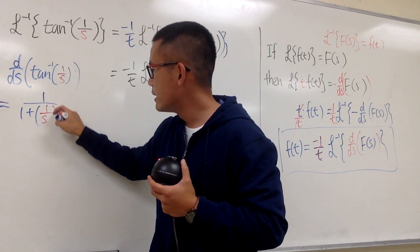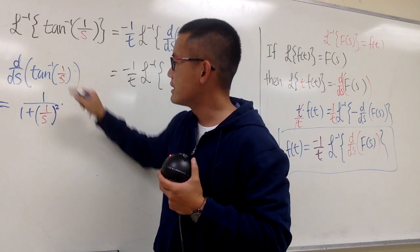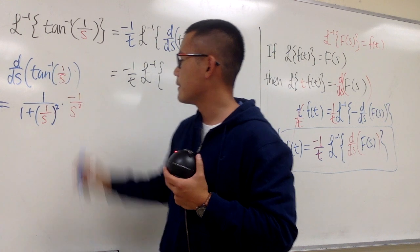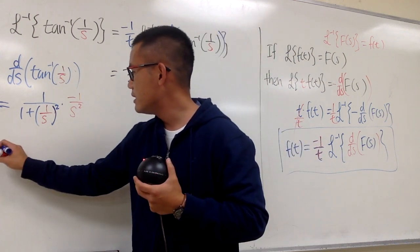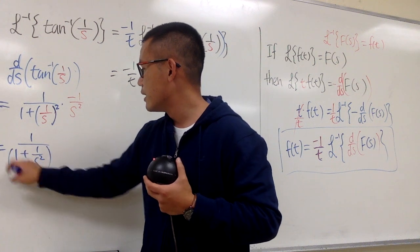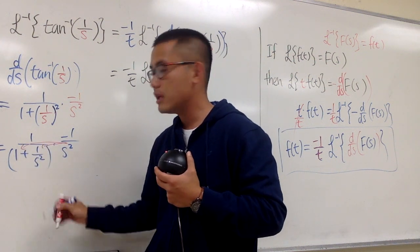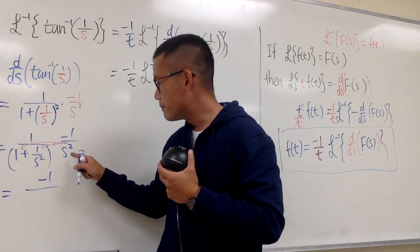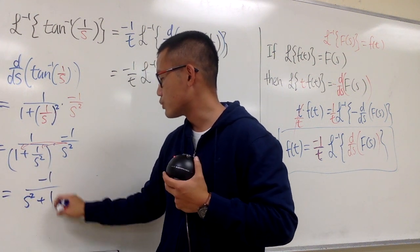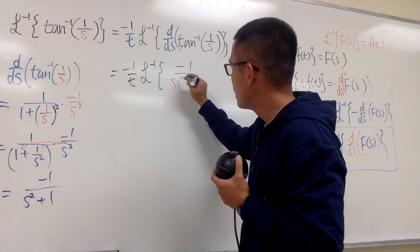By the chain rule, we multiply by the derivative of 1/s, which is negative 1 over s squared. So this becomes 1 over (1 plus 1/s²) times (negative 1/s²). Distributing on the bottom: s² times 1 is s², plus s² times 1/s² is just 1. So the result is negative 1 over s² plus 1.